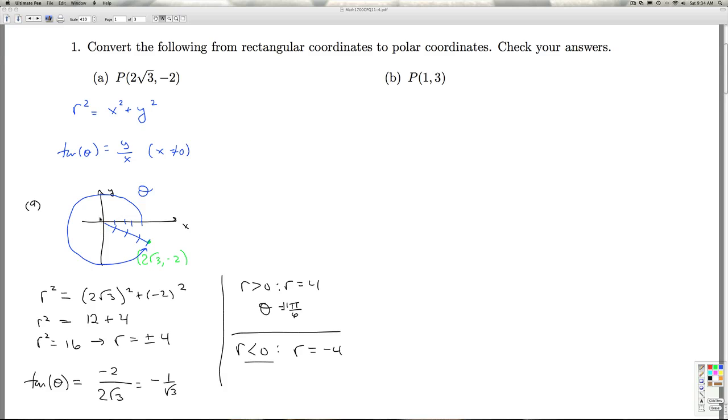from the negative x-axis and then rotate around, in which case I'd be rotating an angle of 5 pi over 6. So one representation with a positive r value is 4, 11 pi over 6.